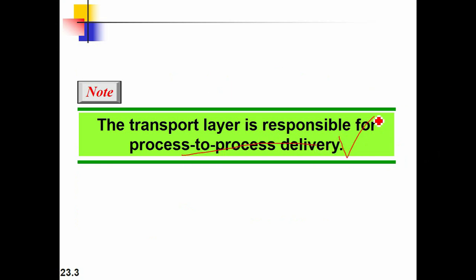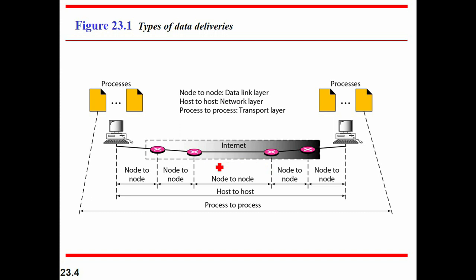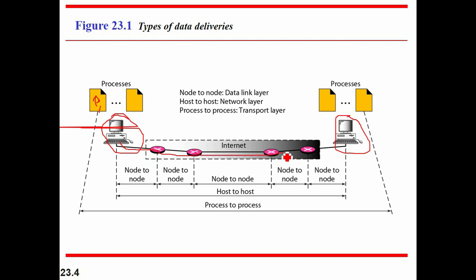The transport layer is responsible for process to process delivery. Let us learn by using this diagram. For example, there is a process called P1 — let's say this process is your Google Chrome. There is a server over here as the destination, and this is the sender. You want to send some data from sender to destination. You can send it directly through routers using the data link layer. If you want to send data from one node to another, you need the network layer. But if you want to send data from one process to another, then you need to know a different kind of address, known as the port address.